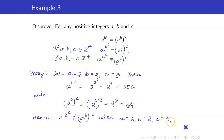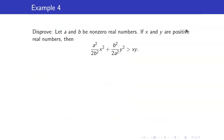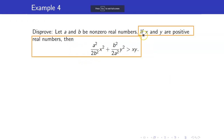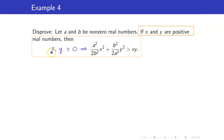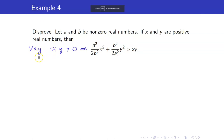Therefore, these values provide a counterexample to disprove this statement. Next, we want to disprove this statement: let a and b be non-zero real numbers. If x and y are positive real numbers, then we have this inequality. This is saying: if x, y are positive, then this inequality must be true. However, the implicit quantifier for x and y here is 'for all x, y'. So to disprove this statement, we have to show that there are values for x and y such that this inequality is not true.